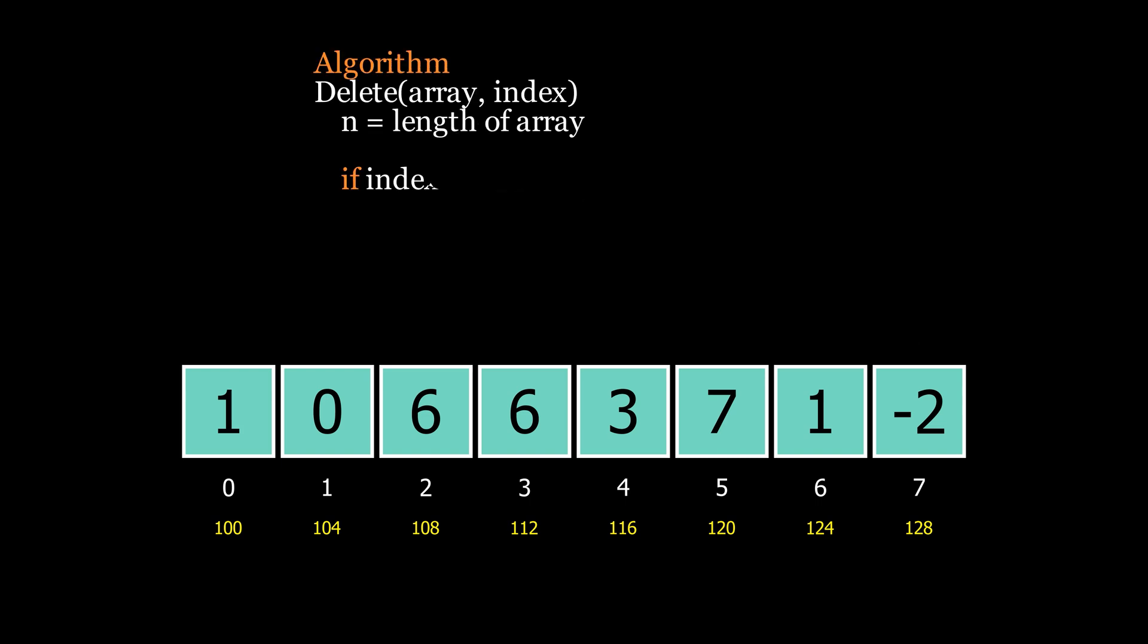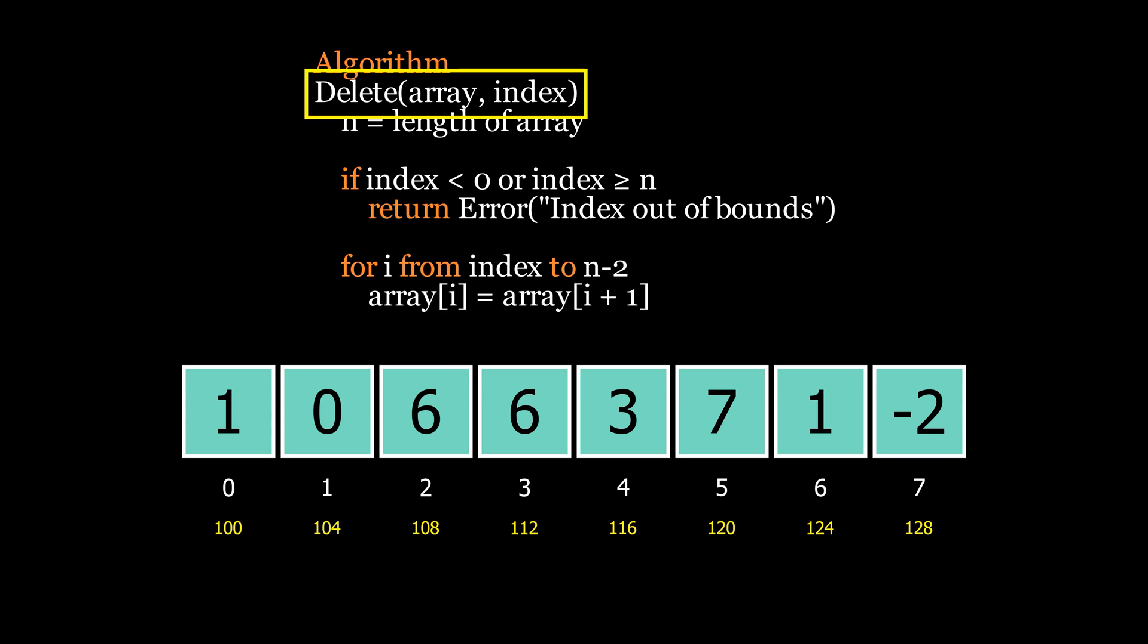Now the next operation is deleting the elements. So here we have a delete function with array and index to be deleted as the parameters. Now n is the length of the array, and then there is a condition that if index is less than 0 or index is greater than or equal to n, it will return the index out of bound error. The next line of code is a loop that runs from index to n-2, and this piece of code essentially shifts all the elements that are right of the index to one element left, effectively overriding the target element.